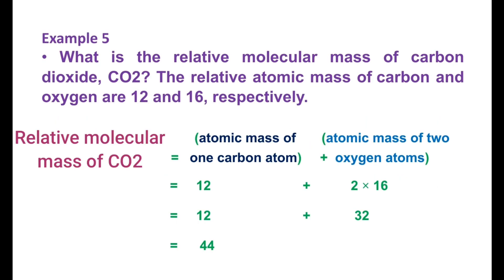Number 5: What is the related molecular mass of carbon dioxide, CO2? The related atomic masses of carbon and oxygen are 12 and 16 respectively. The molecular mass of CO2 equals the atomic mass of one carbon atom plus two oxygen atoms: 12 + 2 × 16 = 44 amu.